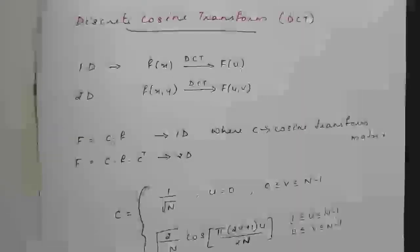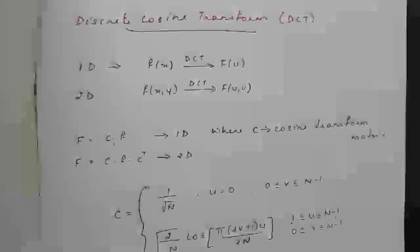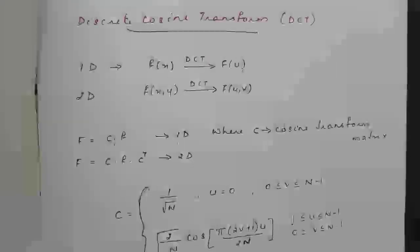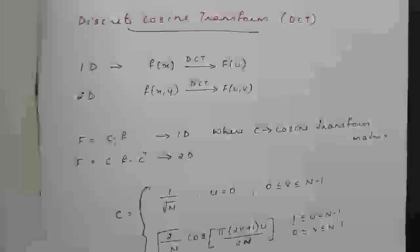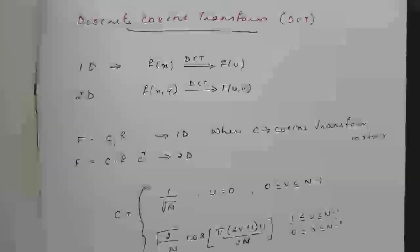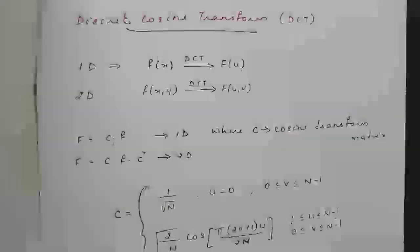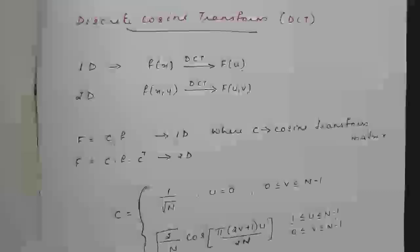Today's topic is Discrete Cosine Transform, DCT. It is similar to DFT, Discrete Fourier Transform. In both DCT and DFT, the time domain input signal is converted to the frequency domain. The difference is that in DFT we have complex terms, whereas in DCT we have only real terms. Both DCT and DFT are sinusoidal functions.